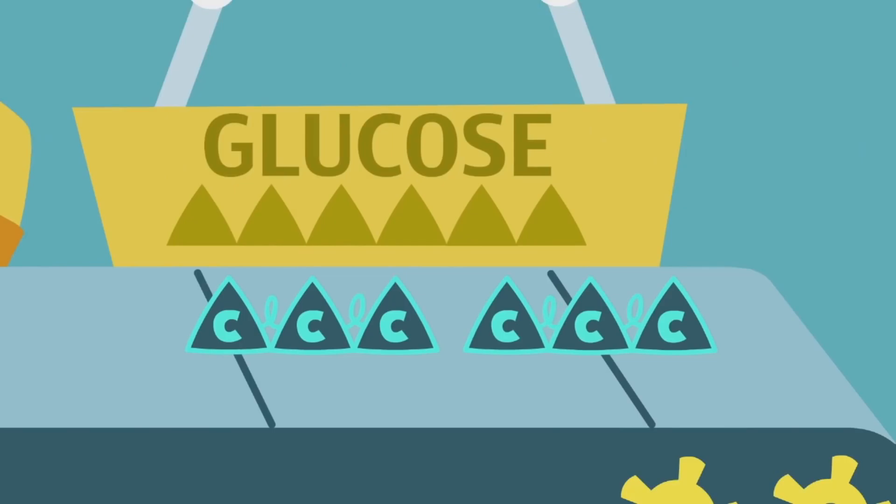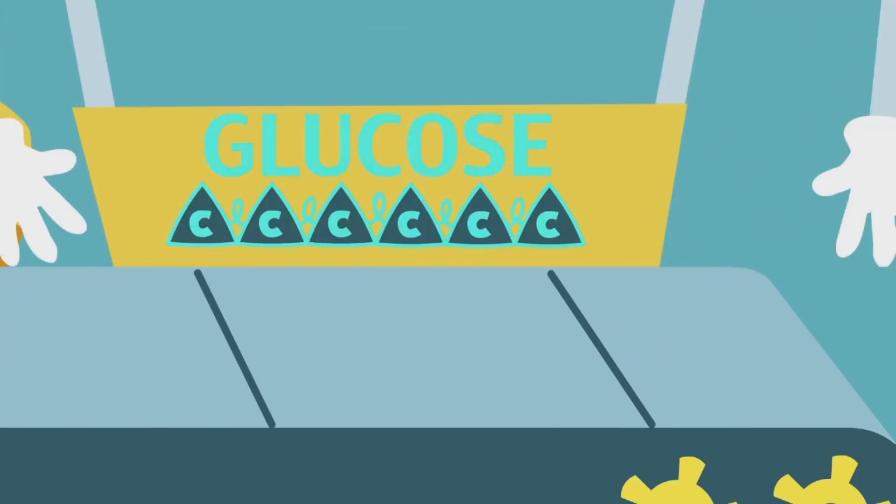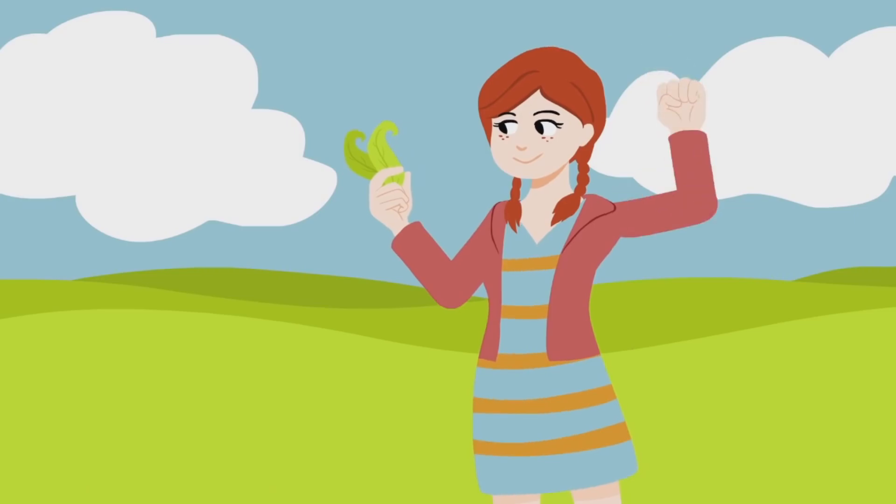Glucose needs six carbons to form, made from two molecules of G3P, which have six carbons between them. So sugar has just been manufactured, right? Not quite.